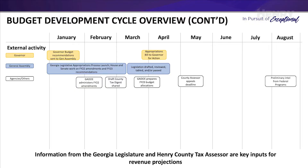The general fund receives state, local, and federal funds, but the state and local funding account for 99.5% of our general fund revenues, which are allocated to those general fund purposes. Accordingly, the external activity, such as the governor's budget recommendations, the state budget process, and Henry County's tax assessor processes, have a significant impact on our system's budget planning.